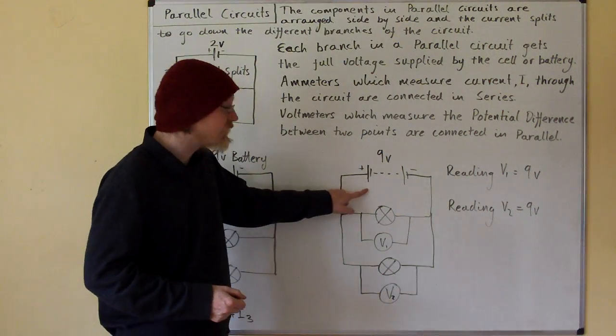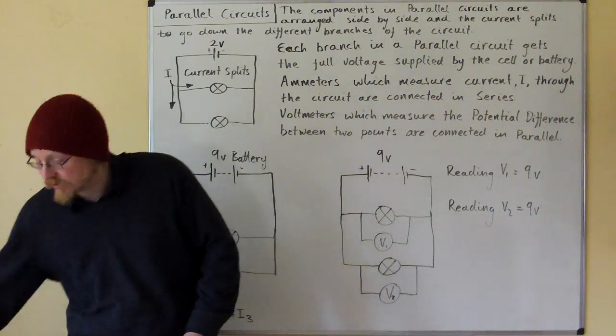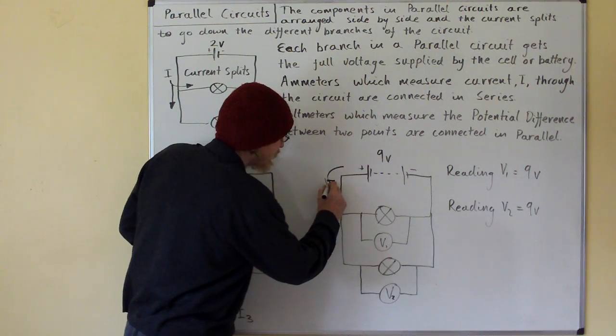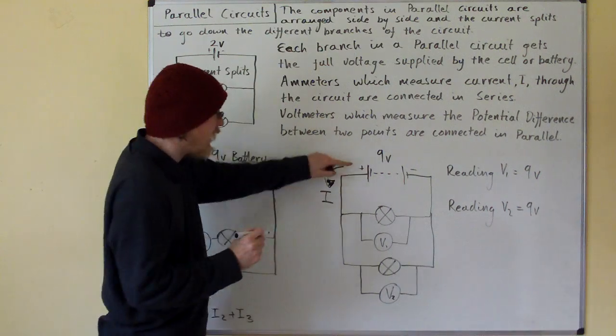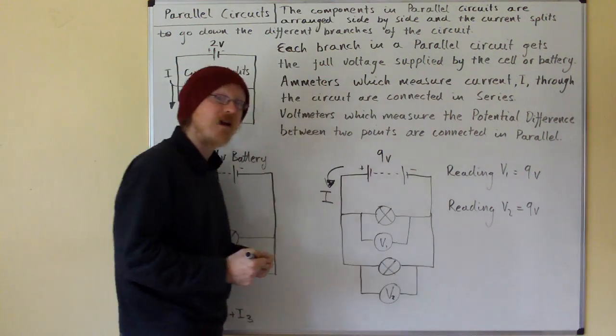In this diagram, we've got our 9 volt battery again. The conventional current is going round from positive to negative, so conventional current I goes from positive to negative, but the electrons will go round the other way.